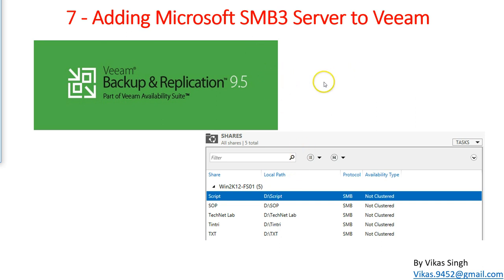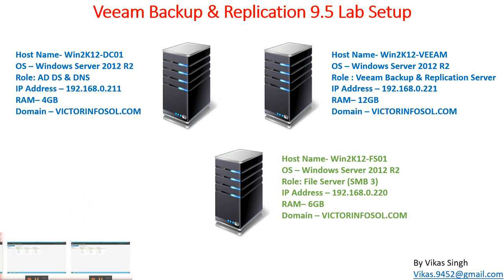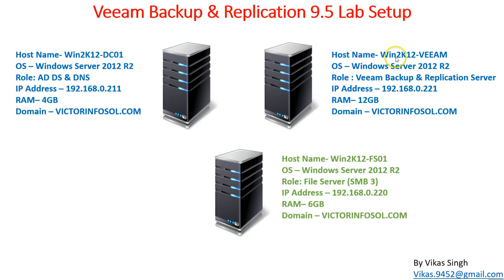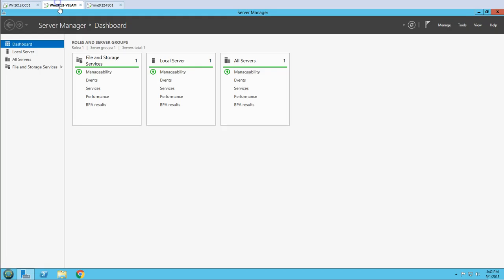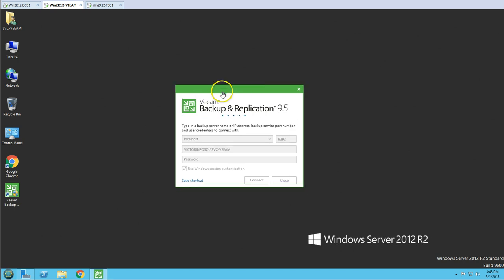We are going to see how we can add and configure SMB shares in the Veeam Backup and Replication console. Here you can see we have a few shares on our file server, which is win2k12-FS01. In the lab environment we are using two machines: the first is win2k12-DC01, which is our domain controller, and the second is win2k12-Veeam, which is our Veeam Backup and Replication server. I'm going to open the console from Veeam Backup and Replication and connect to it.